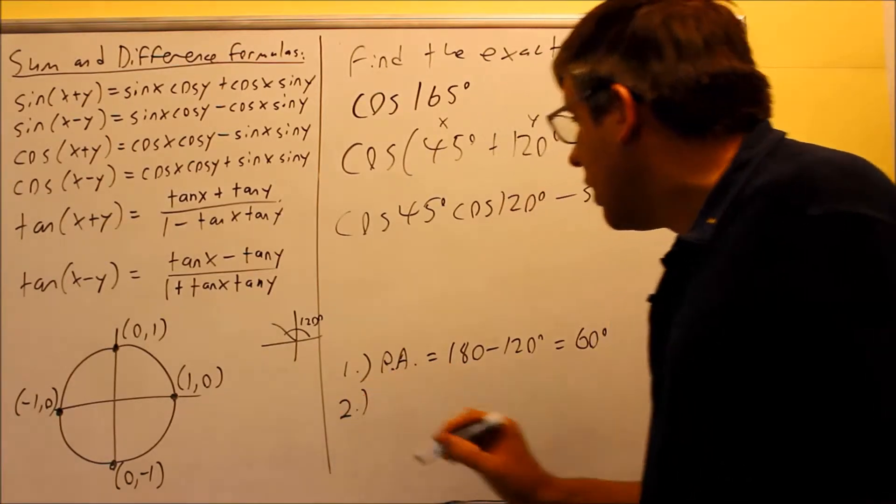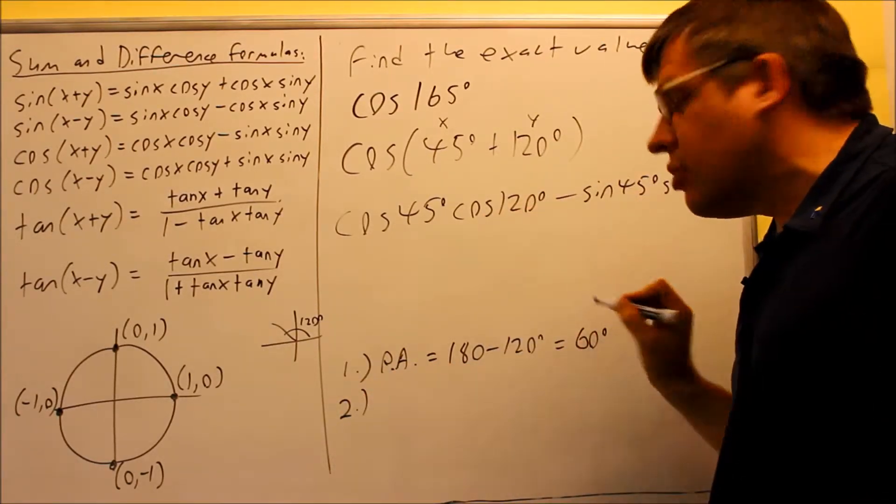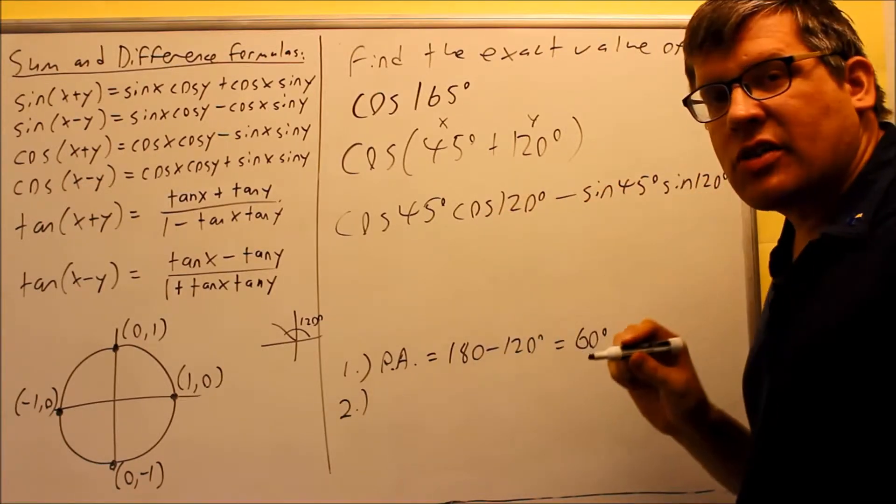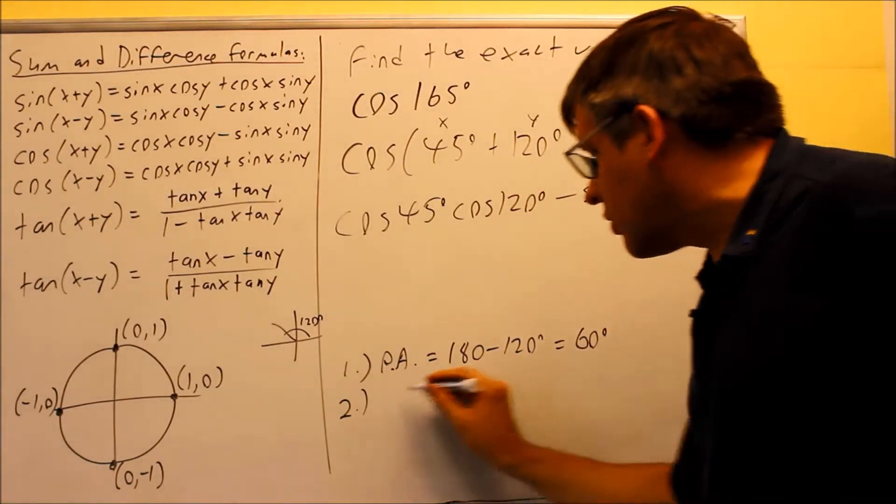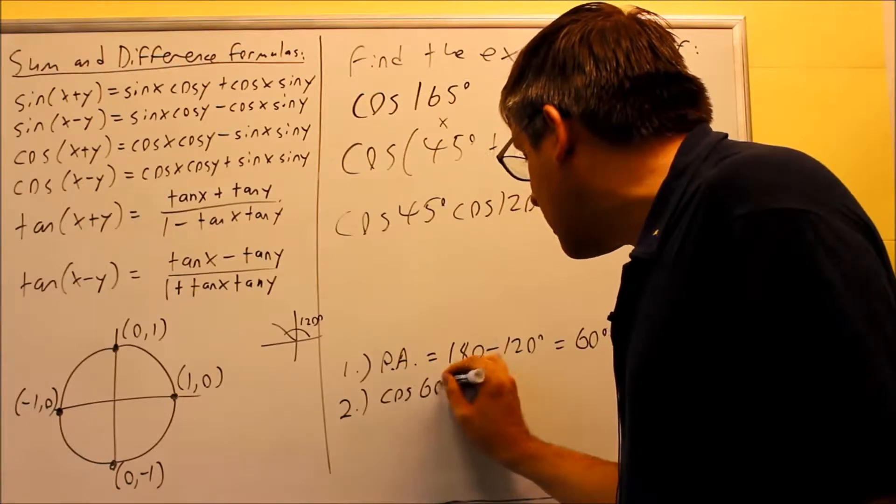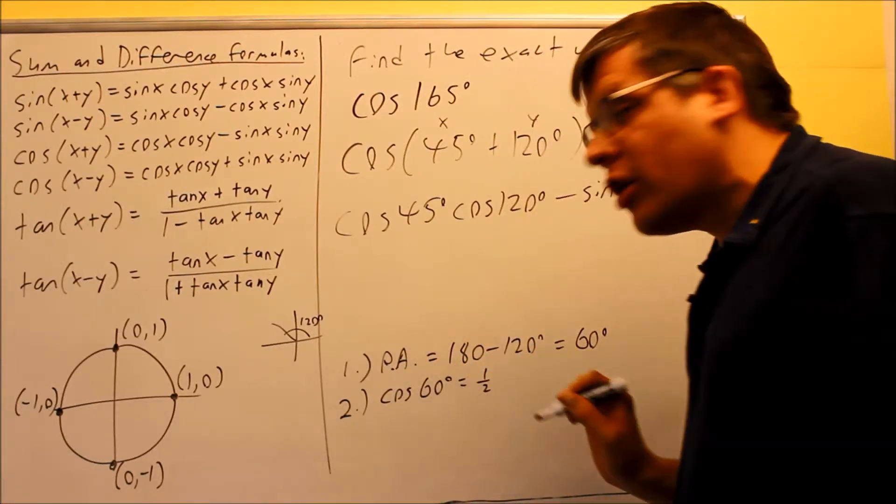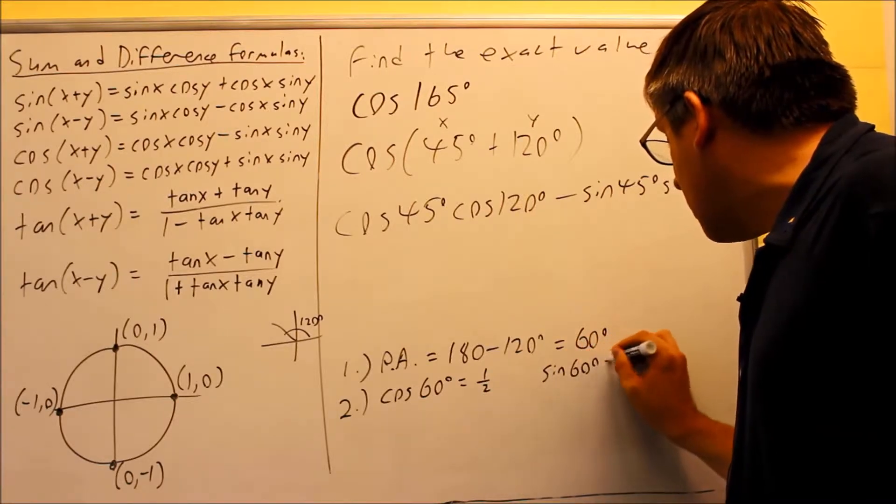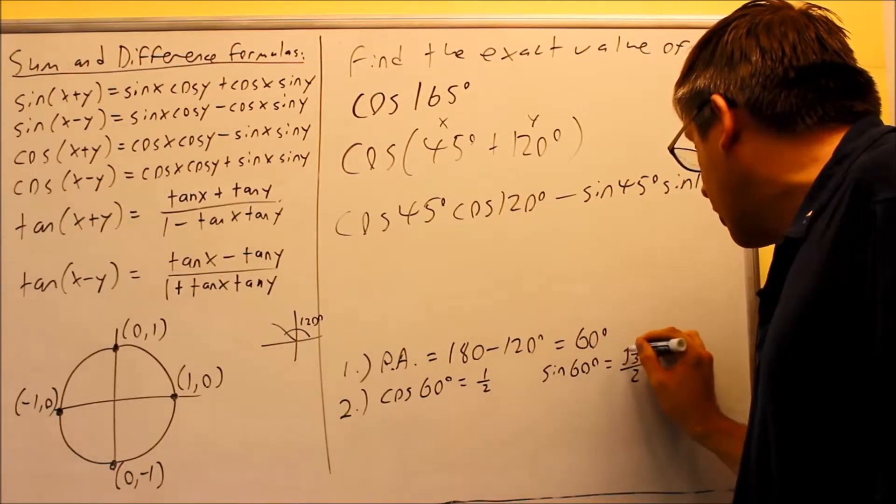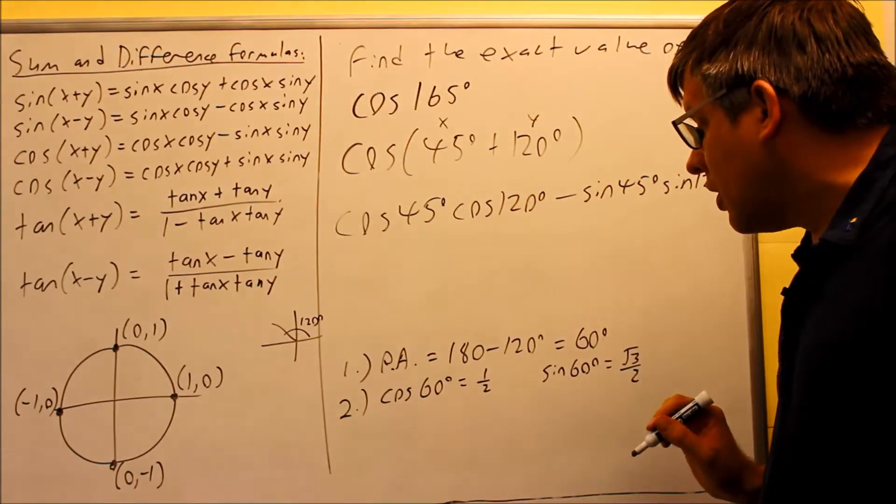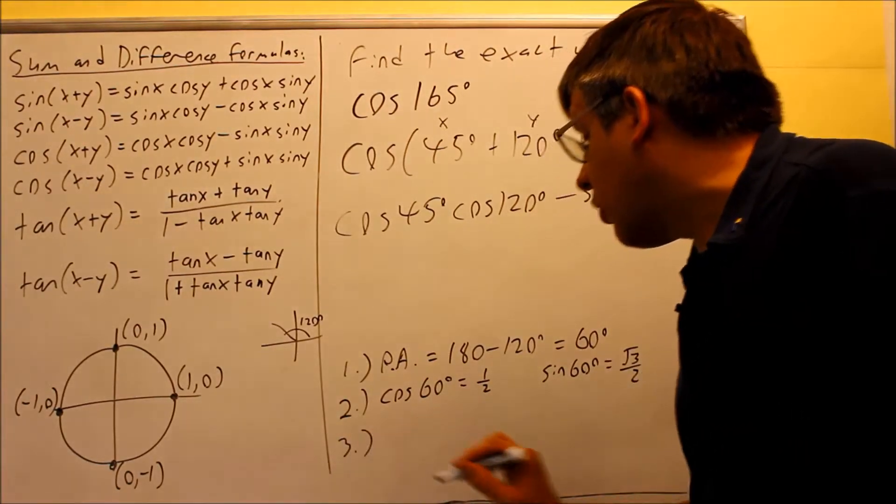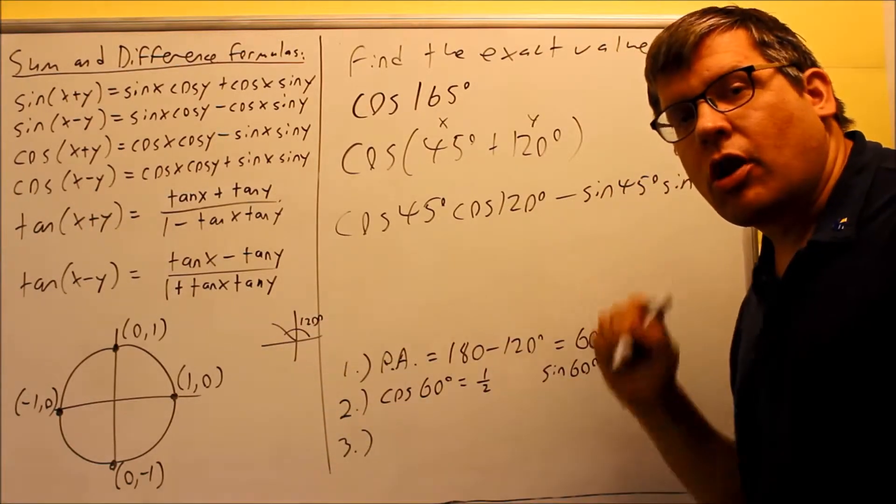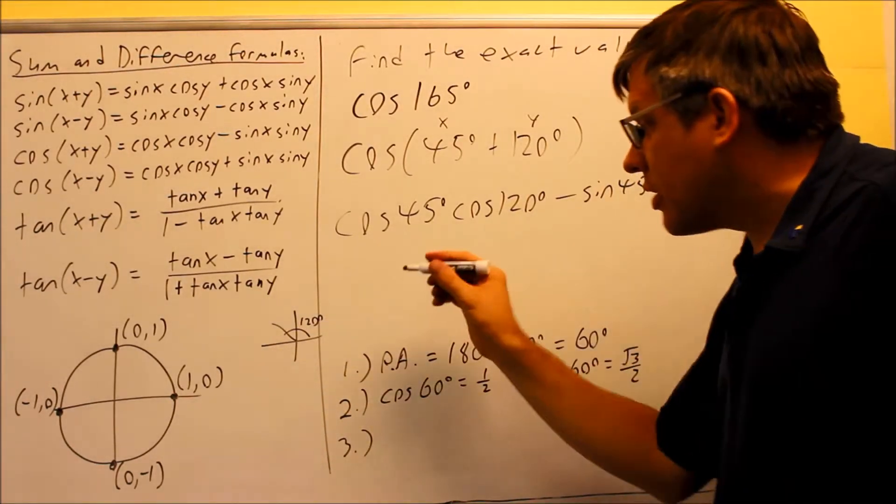For step number two, you want to apply the trig function to the reference angle. Now in this case, our trig function is both cosine and sine. We actually want to find both those values. So first I'll do cosine 60, and I get the value of 1 half, and then I'm also going to do sine of 60, and that's going to be square root of 3 over 2. For step number three, I want to apply the appropriate sign, depending on which quadrant you're in, and we're going to do the all students take calculus sign rule for that.